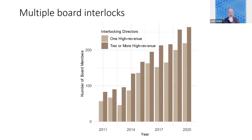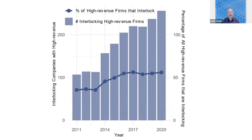We also show that many companies — a surprising number — have more than one interlocking director. So it's not just that you have a board member who also happens to sit on a competitor. In hundreds of cases, we see two or more directors on high-revenue companies that are interlocked with other competitors. There are multiple and overlapping interlocks, as the original connectome graph showed.